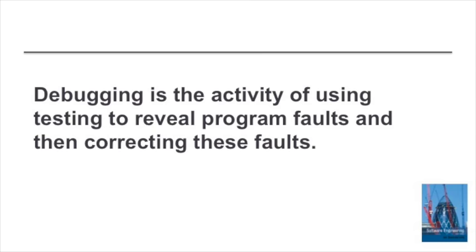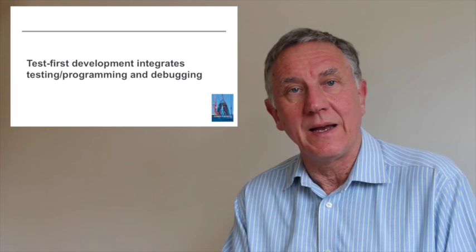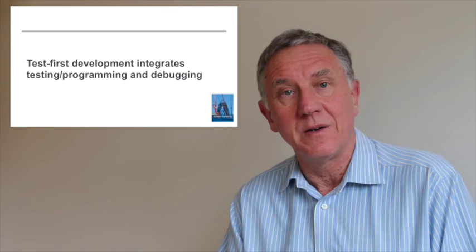Then we have the process of debugging, which is part of the programming process, where tests are run, problems are discovered, and fixed in the program. It's an inherent part of many agile methods that testing and programming are very closely linked, so that sometimes we do test-first development. But that will be the subject of a later video.